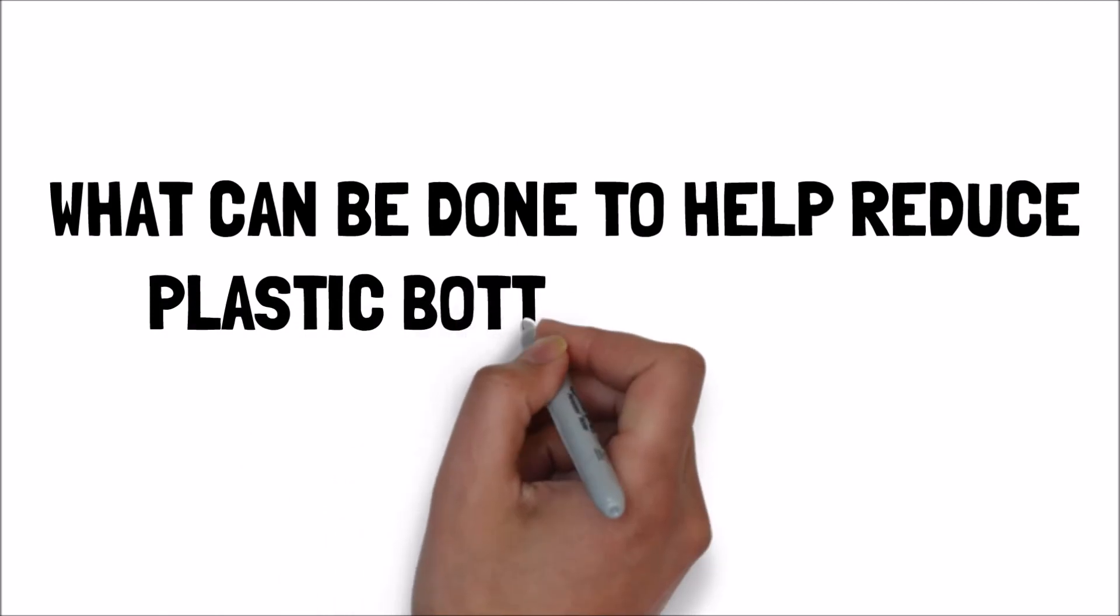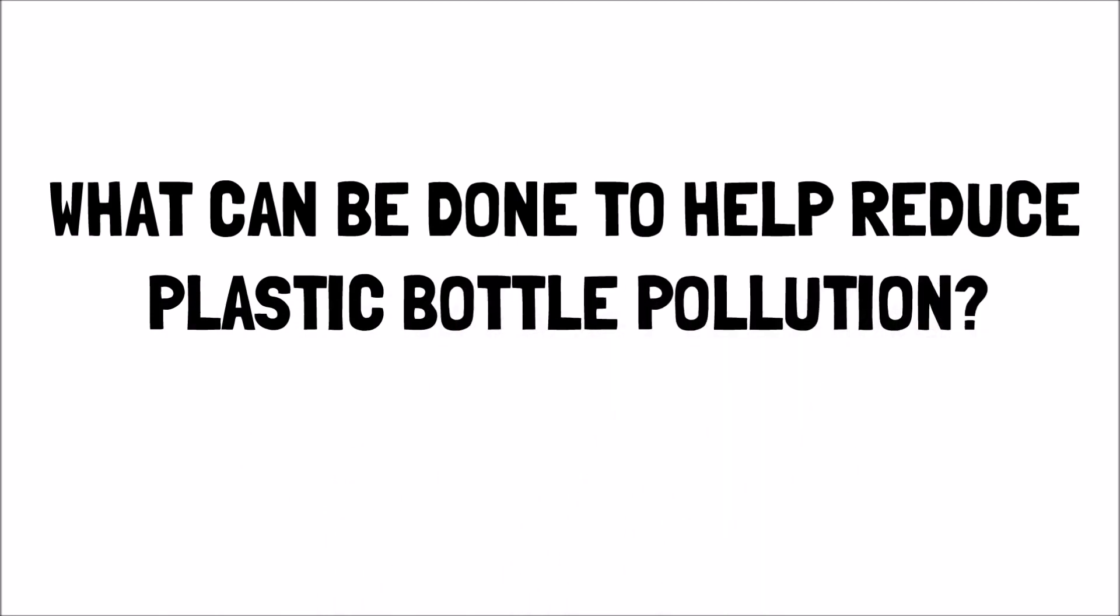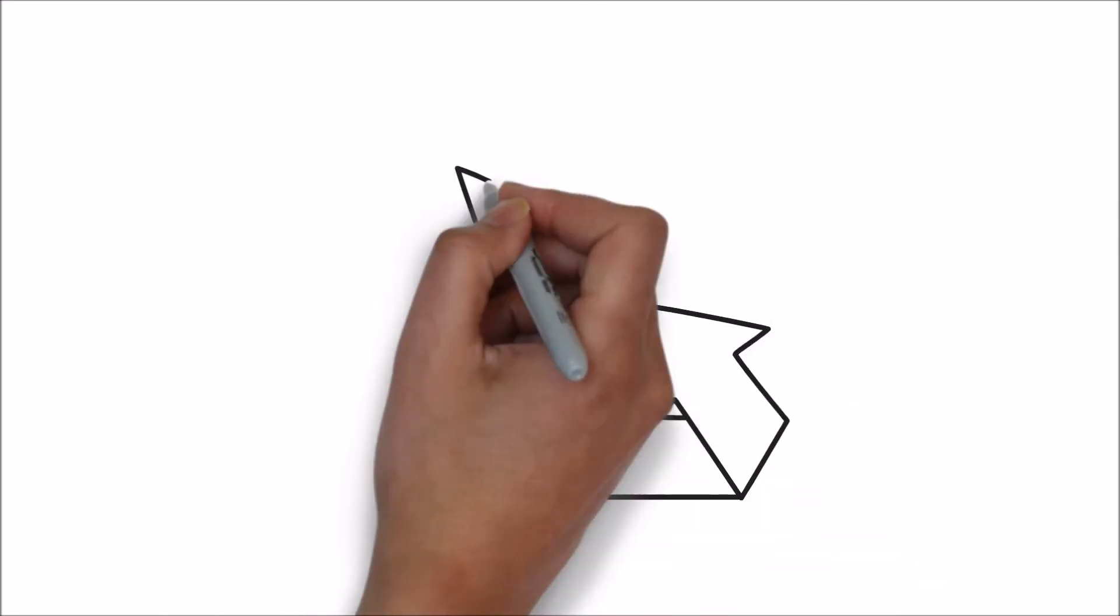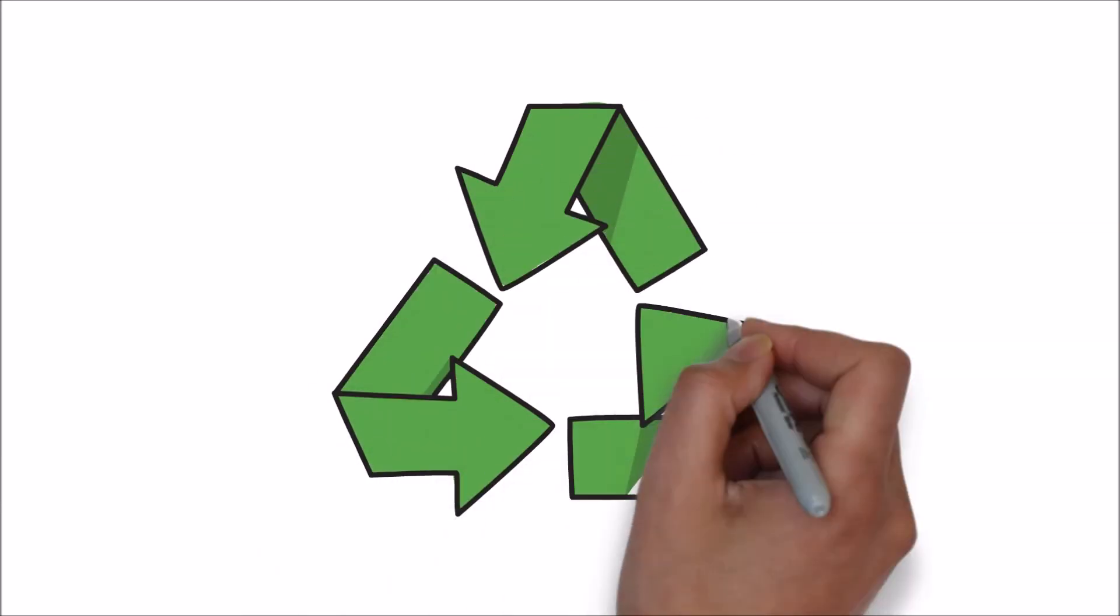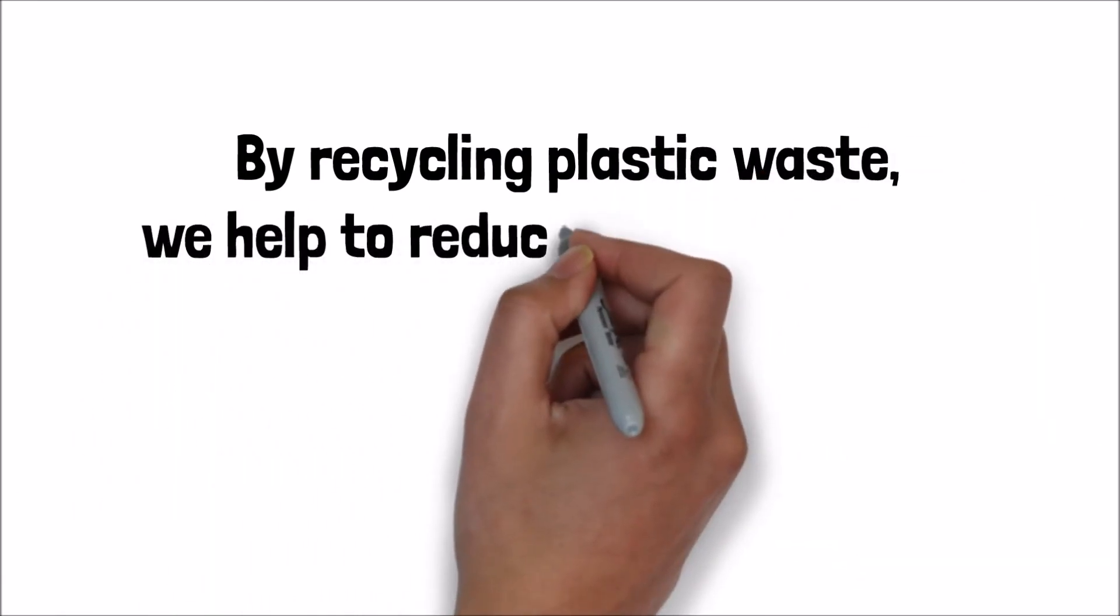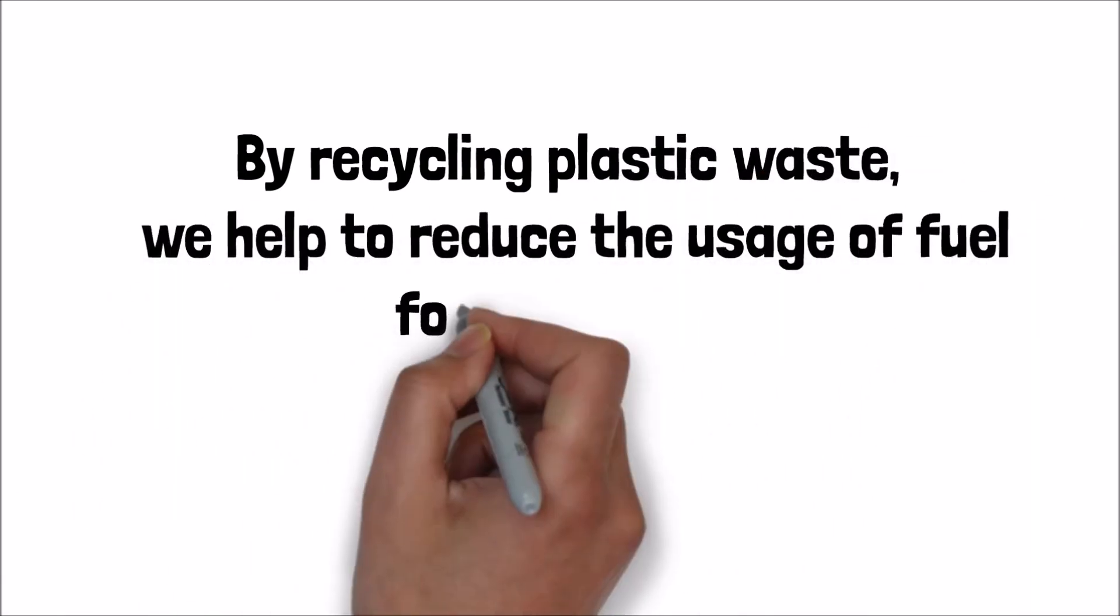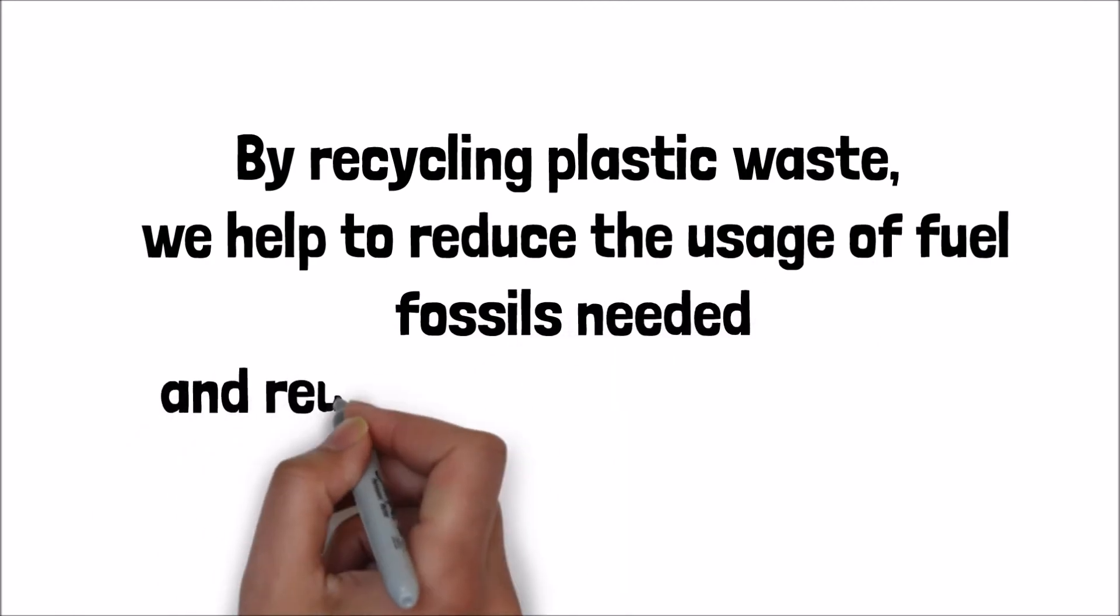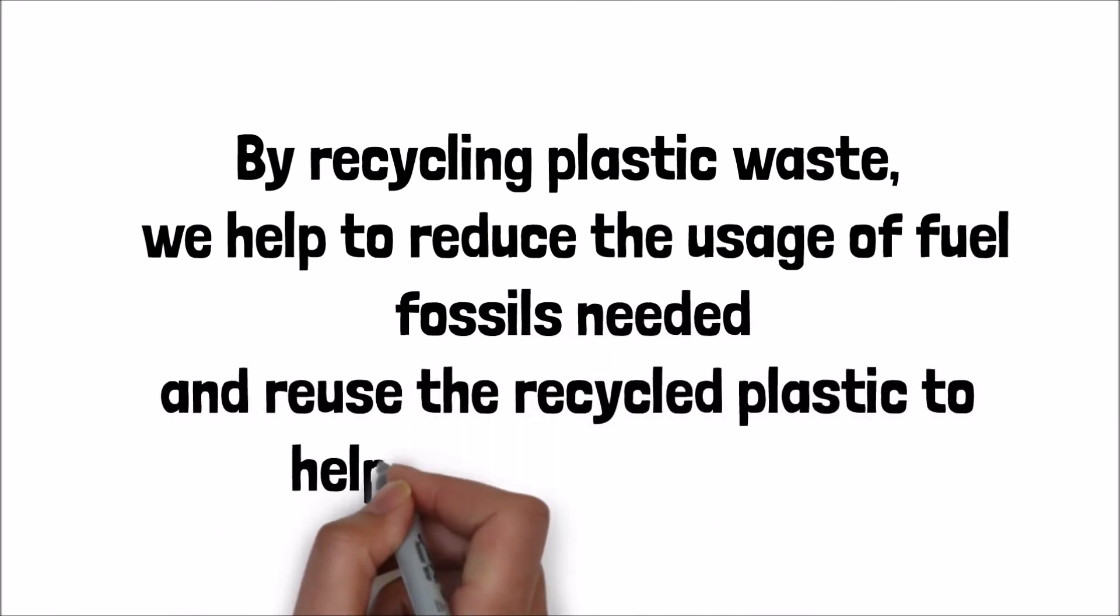What can be done to help reduce plastic bottle pollution? There are a couple of ways that we can help reduce the amount of plastic that contributes to plastic pollution. For example, one way is to follow the reduce, reuse, and recycle approach. By recycling plastic waste, we can help to reduce the usage of fossil fuels needed and reuse the recycled plastic to help make new bottles.